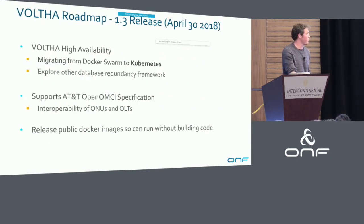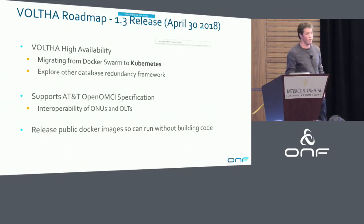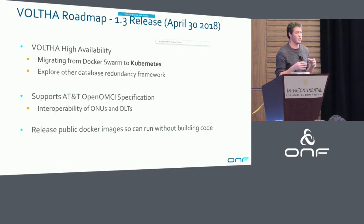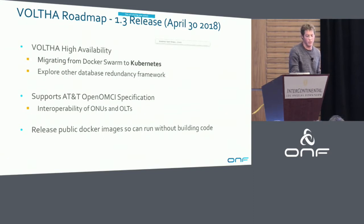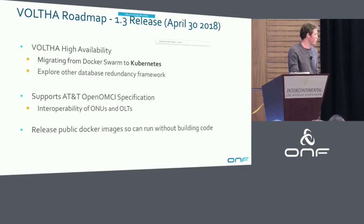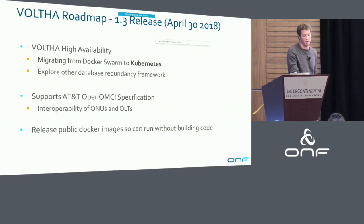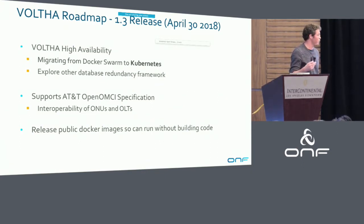In about a month's time — end of April — there will be a 1.3 release of VOLTHA. Some highlights include moving the operations platform from Docker Swarm to Kubernetes. VOLTHA is built around modern containerized architectures, running as a set of containers, and Kubernetes provides a better management and operations framework. The second highlight is initial support for AT&T's open OMCI specification, which will improve interoperability of different vendors' ONUs and OLTs. We'll also be releasing public Docker images so you can pull them down and run them without building everything from source code.